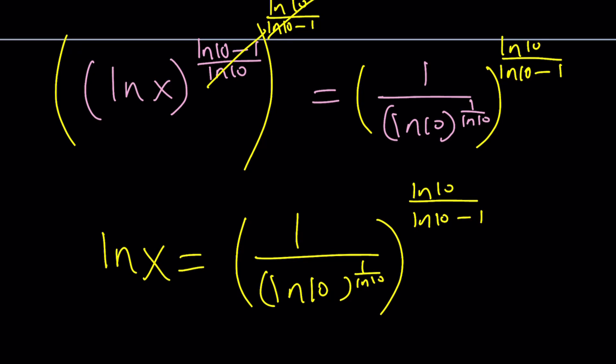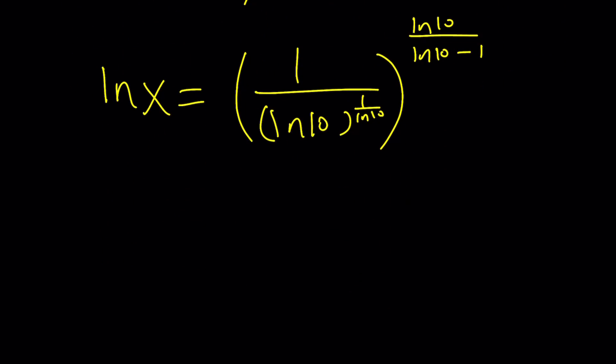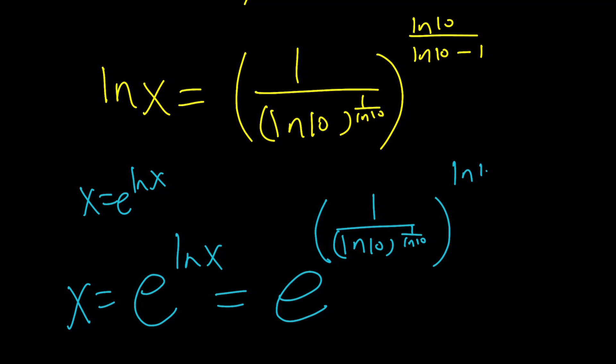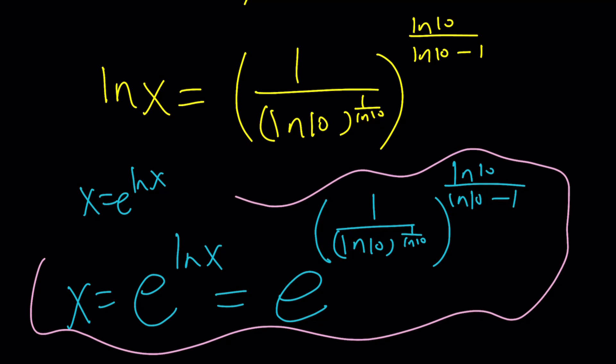Just bear with me and good job if you're still around. I want to get x and notice that x is e to the power ln x. So if we do e to the power ln x that's going to be e to the power 1 over ln 10 to the power 1 over ln 10 to the power ln 10 over ln 10 minus one. Awesome. That should be our answer and this should bring us to the end of this video.